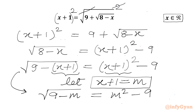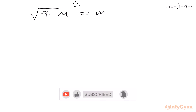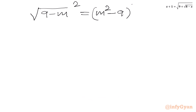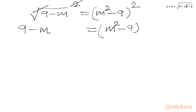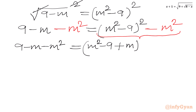Now I will square both sides once again. So (√(9−m))² equals (m²−9)², giving 9 minus m on the LHS. On the RHS we subtract m² from both sides and use the difference of two squares formula, so we write 9 minus m minus m² equals (m²−9+m)(m²−9−m).